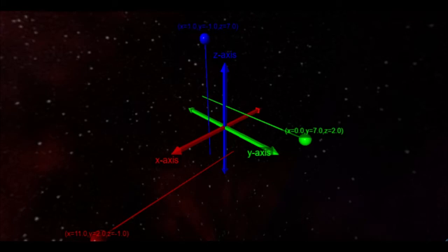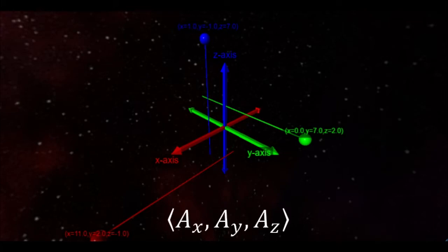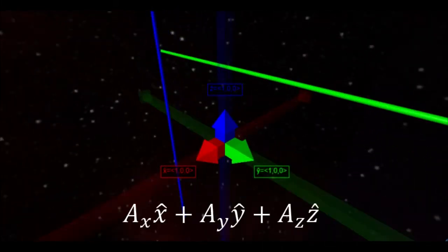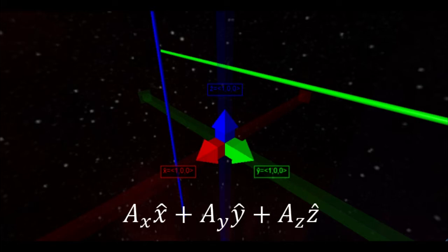You can write a vector in Cartesian coordinates in two formats. First, you can list the X component, Y component, and Z component in a set of brackets. These operate like a set of instructions for how far in each direction the vector's components should point. Second, you can write the vector as an algebraic expression involving each of the components multiplied by its corresponding unit vector. The Cartesian unit vectors, X hat, Y hat, and Z hat, each indicate a distance of one unit along their corresponding axis. These unit vectors are useful when it comes to working out algebraic equations involving vectors.